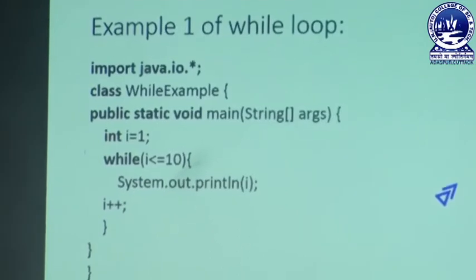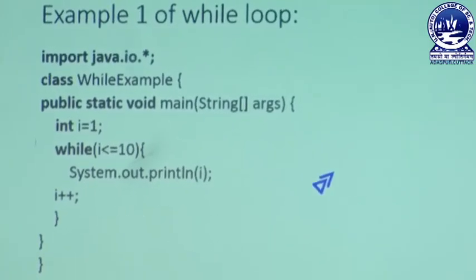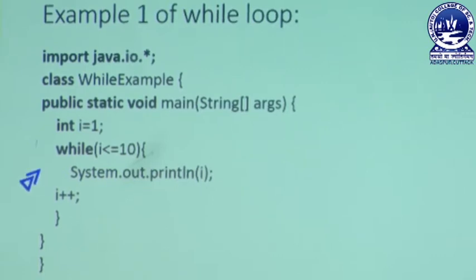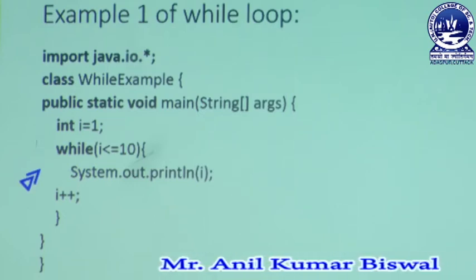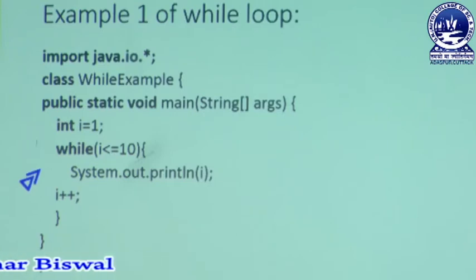Let us focus on the example of while-loop. We are writing a simple example to print values 1 to 10. That program is specially written to display 1 to 10 numbers on our monitor screen using while-loop. First of all, we import the Java IO package — the input-output package. Then we write one statement with a class name 'while-example'. Inside that class, we write the main method: public static void main with String args. In the main method, we write 'int i equal to 1' — we declare a variable i and store the constant 1 in it.